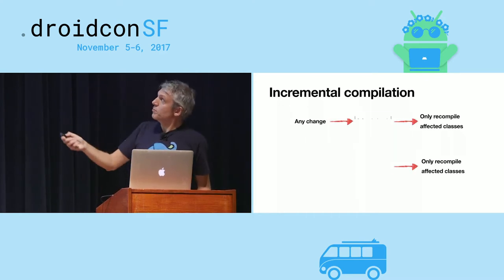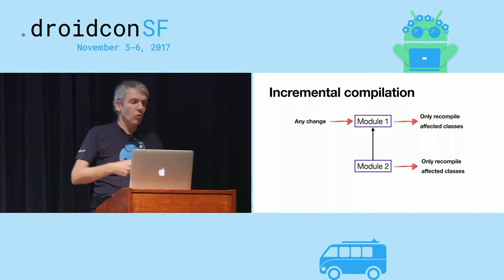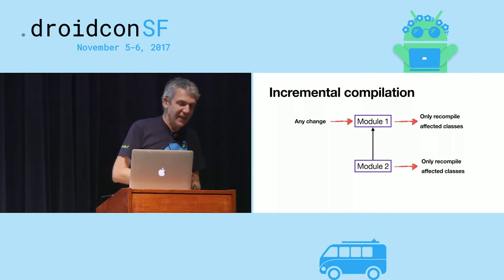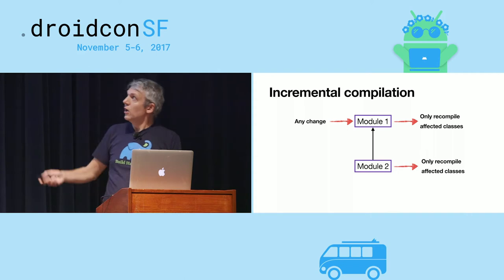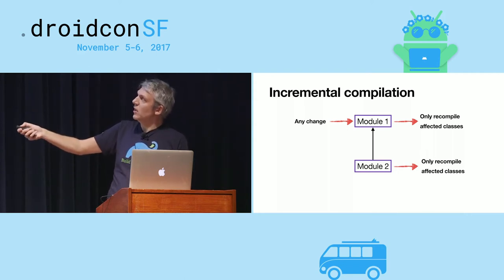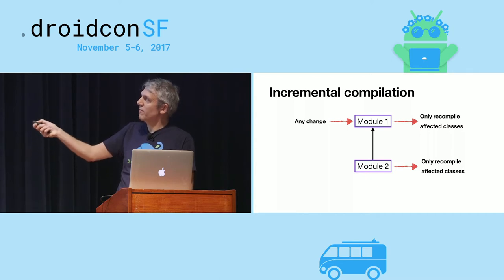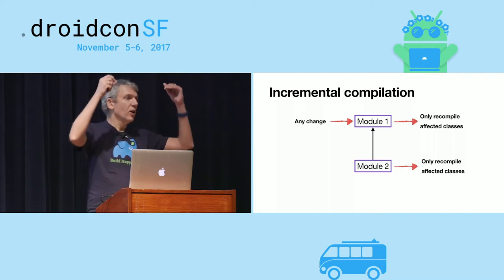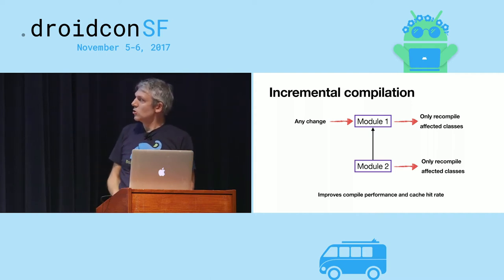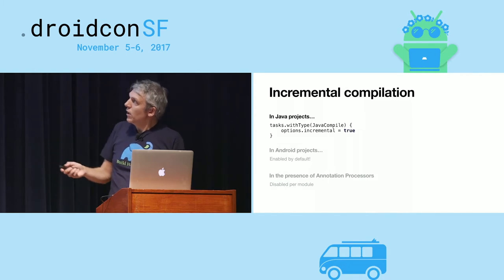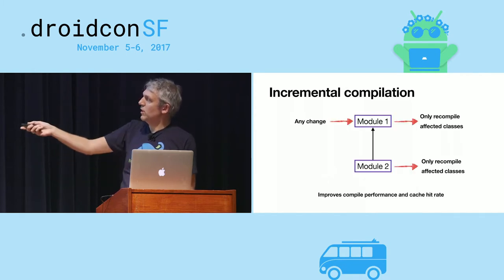Incremental compilation is complementary to compile avoidance. Once Gradle determines a change did affect the interface and recompilation is needed, incremental compilation analyzes the whole class dependency graph and decides which classes need to be recompiled. So even module one is not fully recompiled, and module two is only recompiled as much as it is affected by the change in module one. It's a more expensive analysis, which is why compile avoidance comes first. Note: incremental compilation improves compile avoidance performance but does not improve the cache hit rate — that was clarified as a copy-paste error.